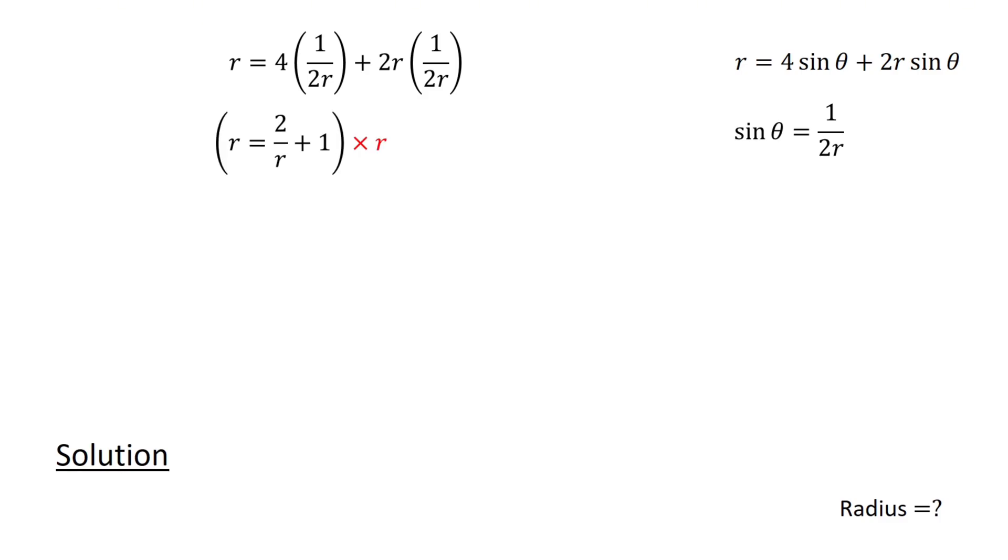Multiplying both sides by R to clear the denominator, and then rearranging, we obtain R squared minus R minus 2 equals 0. Solving this equation by factorization, we obtain R equals 2 or R equals minus 1. Since R is positive, we have R equals 2, which is the solution to our problem.